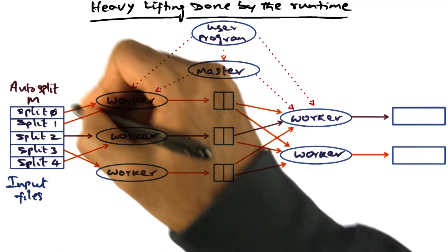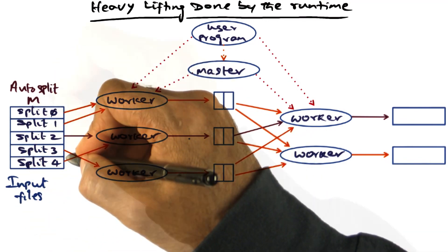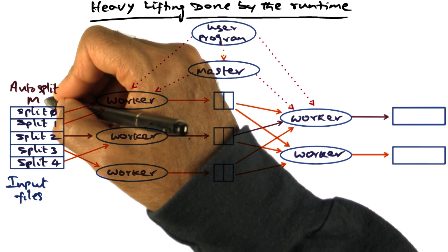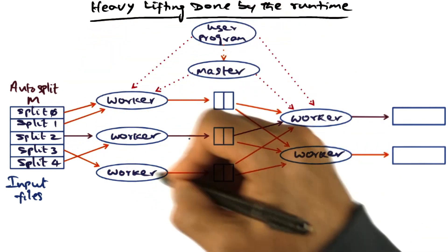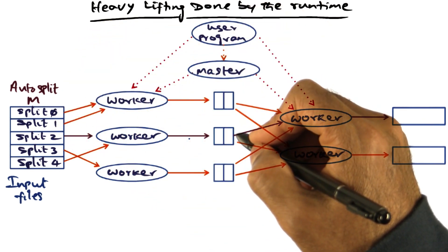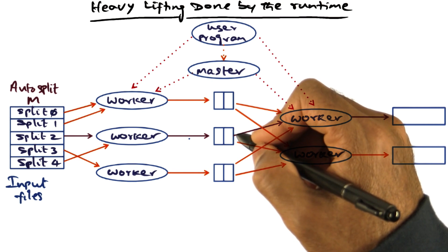The number of splits of the input key value pairs, namely m, can be automatic by the programming system or m can also be specified by the user.